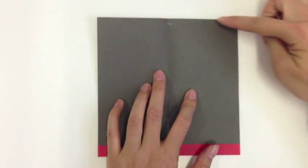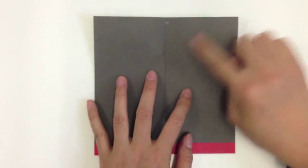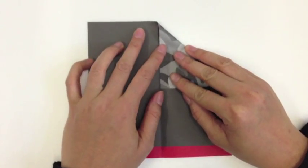Now we're going to open it back up and we're going to take the two top edges and fold the top edges toward the middle, like this.